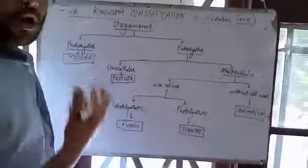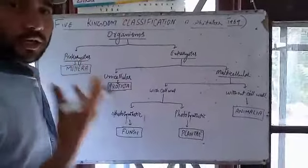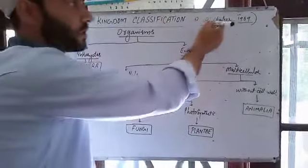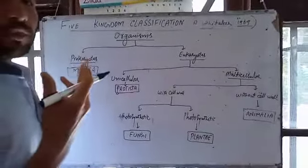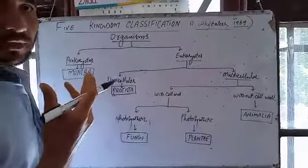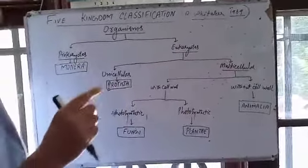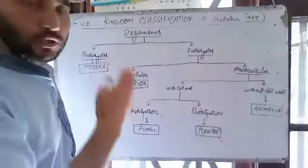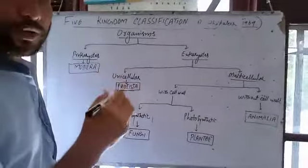Then Whittaker in 1969 classified all organisms on the earth into five kingdoms. There are some criteria used to divide all organisms into these different kingdoms — certain characters which are very important to distinguish between the five kingdoms.